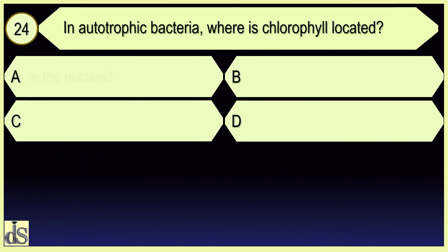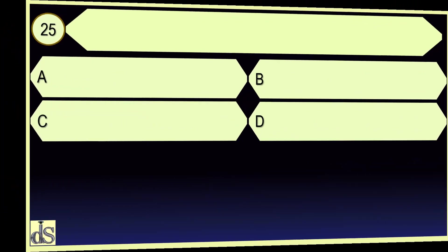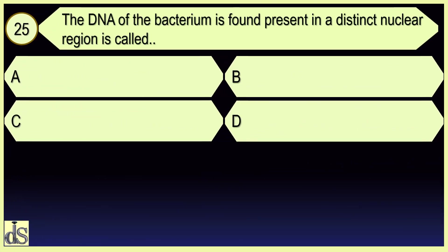In autotrophic bacteria, where is chlorophyll located? In the infolded plasma membrane. The DNA of the bacterium is found present in a distinct nuclear region called nucleoid.